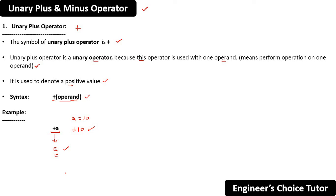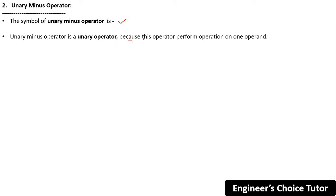Now let's discuss unary minus operator. So unary minus operator, the symbol is this minus sign. Unary minus operator is also a unary operator because this operator perform operation on one operand.